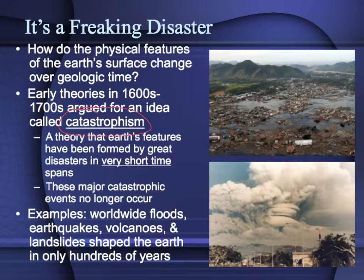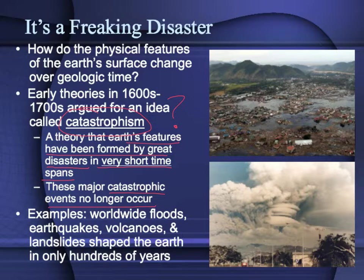The first term is catastrophism. Catastrophism was an early idea of how the Earth's surface changed. The root word is catastrophe, meaning disaster — global disaster. Catastrophism is a hypothesis that Earth's surface features have been formed and altered by great disasters in a very short time span. These major global catastrophic events really don't occur anymore. Using the Bible and religious historical stories as examples: a global flood or giant earthquakes formed the great rock layers or mountains early on, and then those features were in place and these disasters just don't occur anymore on that scale.